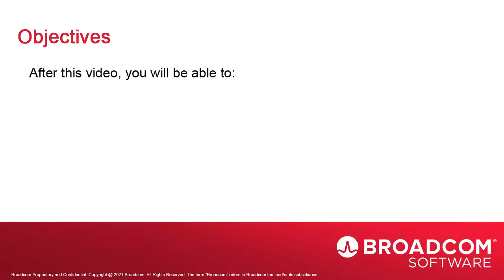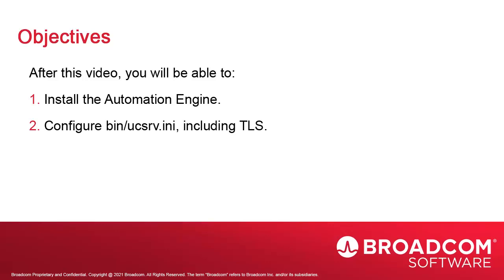We move on to the installation of the Automation Engine. First we copy the compressed tar file to a directory called Automation Engine. We focus on the contents of the bin directory. There you find a configuration file ucsrv.ini. There are a number of settings we need to consider, like the ODBC-VAR string and TLS. All database packages use Java functions, which means the Automation Engine needs a JDBC driver. We'll configure the JDBC connection to the database and then download the PostgreSQL JDBC driver and make it available to AE.